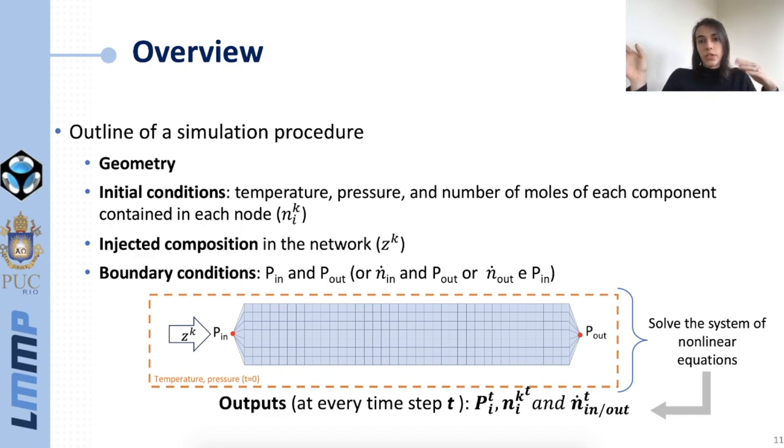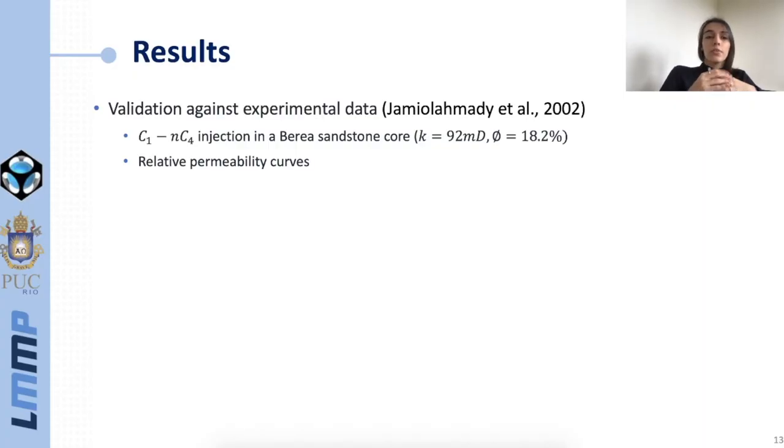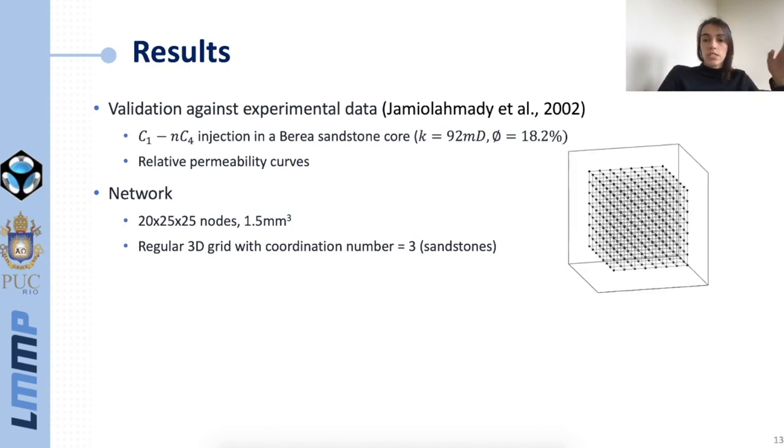Now we move to the results section. The results I present today are from a validation against experimental data. In those experiments a binary mixture of methane and butane was injected in a Berea sandstone core and relative permeability curves were obtained. To reproduce those experiments a network of 20 by 25 by 25 nodes was used and the actual size of network was 1.5 cubic millimeters. This network was a regular 3D grid with coordination number of 3, and the coordination number is the number of edges connected to each node. So to create this network first I started with a cubic lattice of nodes and edges and then I randomly removed some of those edges until I got the coordination number of 3.